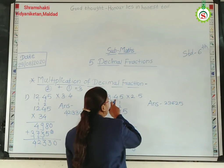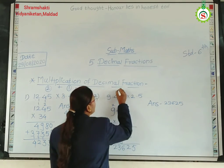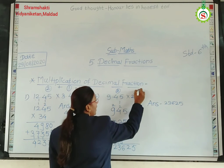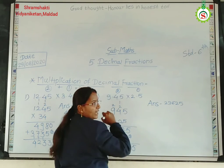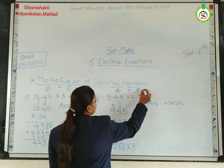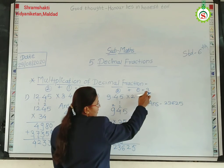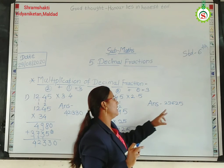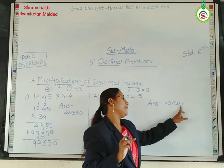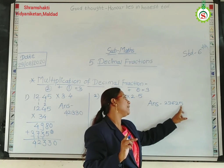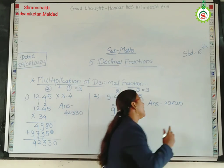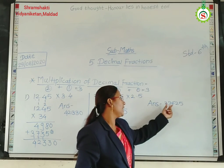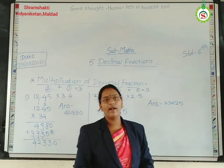Now, how many digits after the point here? 2 digits. And here, how many digits after the point? 1 digit. So 2 plus 1 gives us 3. Leave 3 places from the unit place — 1, 2 and 3. So our answer is 23.625.